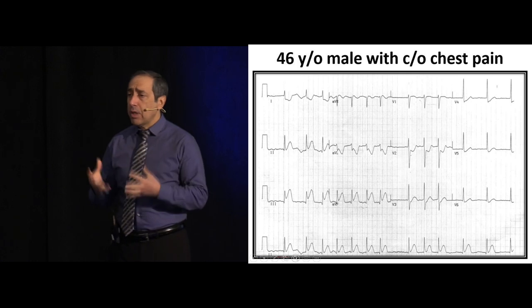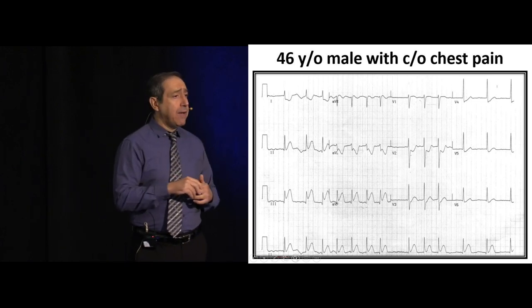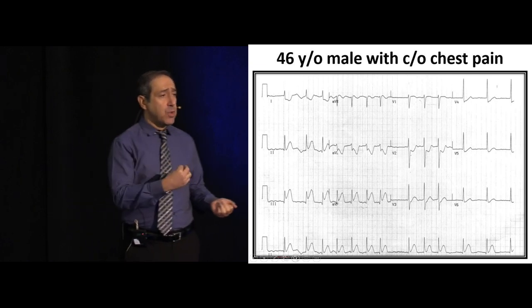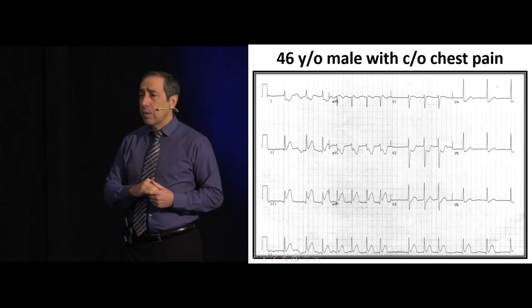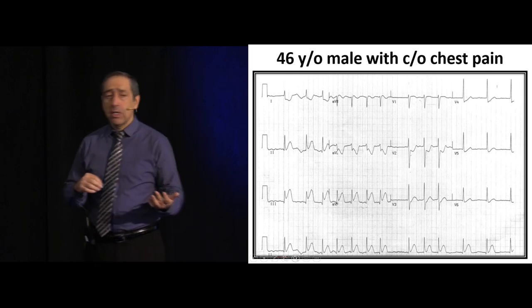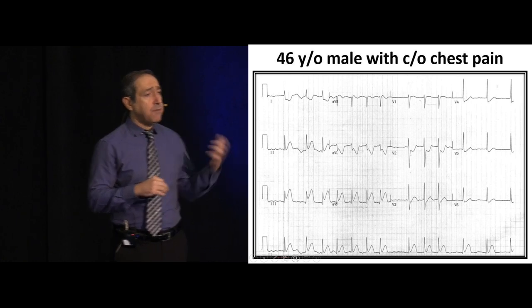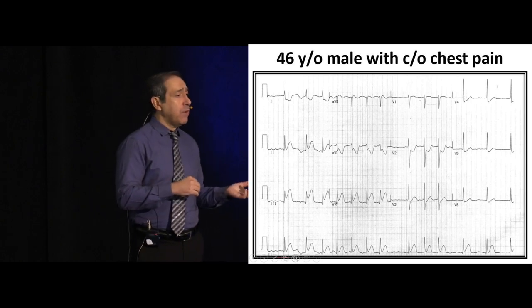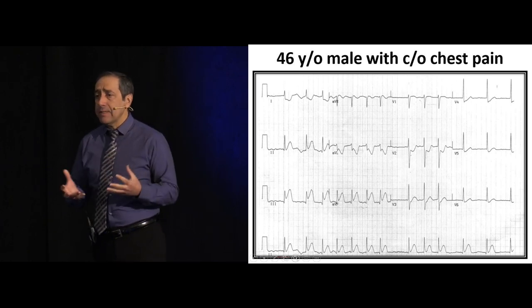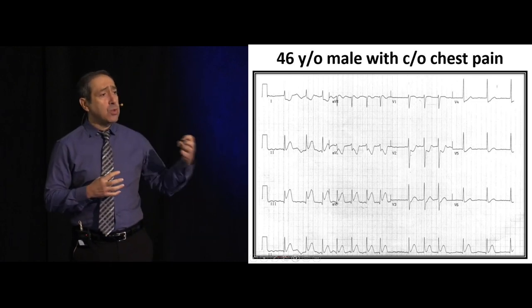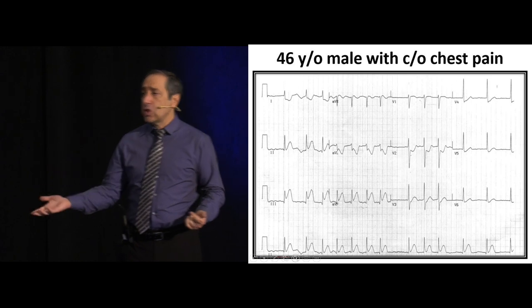Depending on where the blockage is: if it's really proximal, before the bifurcation, you're going to have decreased blood supply to your right ventricle as well as the inferior and posterior aspect of your heart. So a right coronary occlusion can give you ischemic features in the right ventricle and the inferior part of the left ventricle. When we have an inferior MI manifesting as ST elevation in leads 2, 3, and AVF, we always look for right ventricular infarction and posterior infarction.